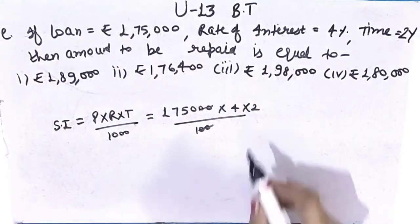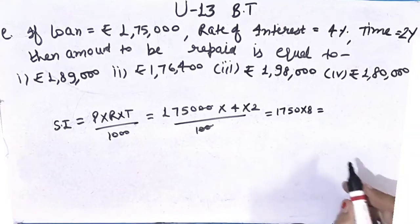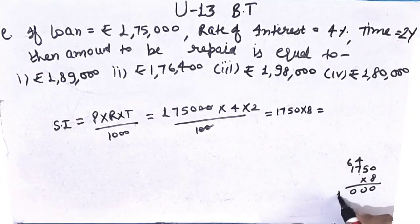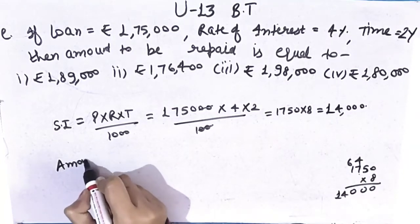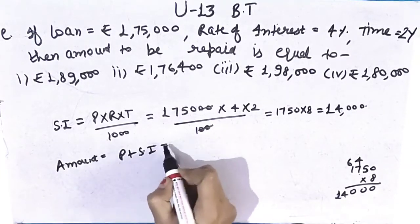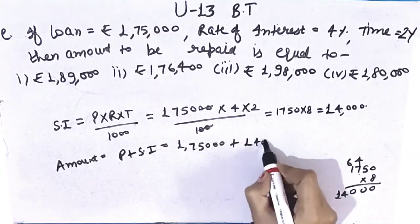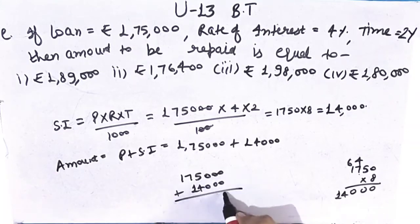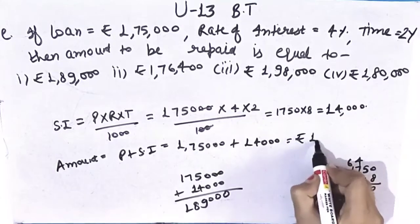After cancellation: 4 × 2 is 8. Now multiply 1,750 by 8: 8 × 0 is 0, 8 × 5 is 40, 8 × 7 is 56 plus 4 is 60, 8 × 1 is 8 plus 6 is 14. So simple interest is Rs.14,000. Now find amount: formula is principal plus simple interest. Principal is 1,75,000 plus simple interest 14,000. Adding: 0+0=0, 5+4=9, 7+1=8 and carry 1. Amount is Rs.1,89,000. First option is correct.